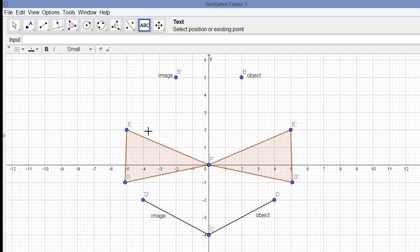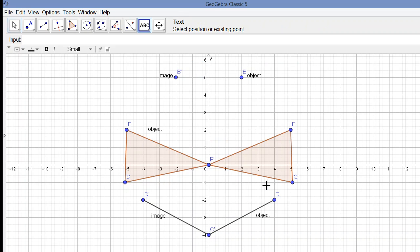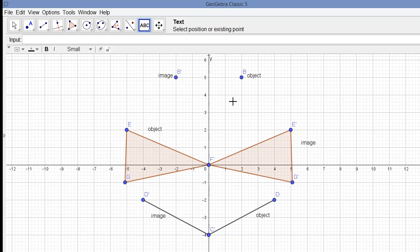And for the polygon, let's label our object over here and our image over here. Our mirror line would be the y-axis.